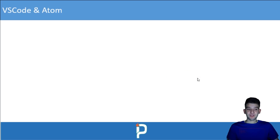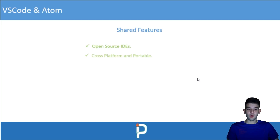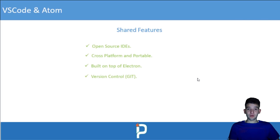Now let's look at the shared features between VS Code and Atom, since they are very similar. Both are open source — one from Microsoft, one from GitHub. Both are cross-platform and portable, so you can run them on Windows, Linux, or macOS. Both are also built on top of Electron, the framework for building desktop apps with JavaScript, HTML, and CSS.